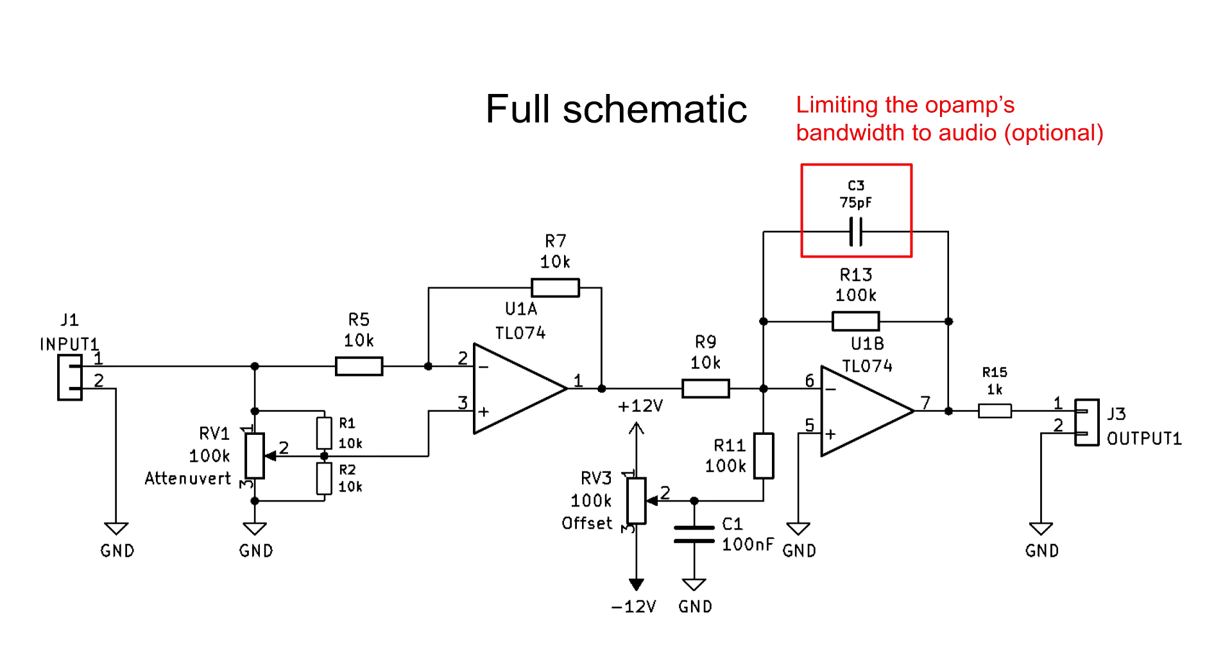C3 is an optional capacitor which limits the bandwidth of the op-amp to the audio spectrum. This can be done to filter high frequency noise and, if needed, fix instabilities.